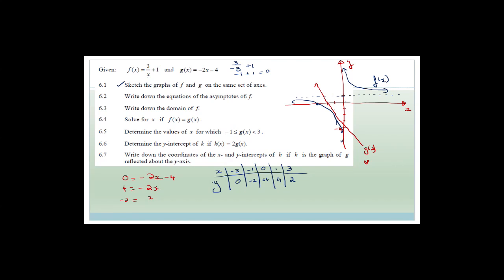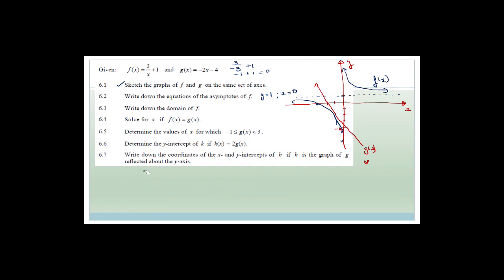Write down the equations of the asymptotes of f. The first asymptote is y = 1 and we also have the y-axis, which is x = 0. Next, determine the domain of f. F is the hyperbola, and it asks for which values of x the graph exists. This graph exists for every x value except where the asymptote occurs, which is at x = 0. So the domain is x ∈ ℝ, x ≠ 0.